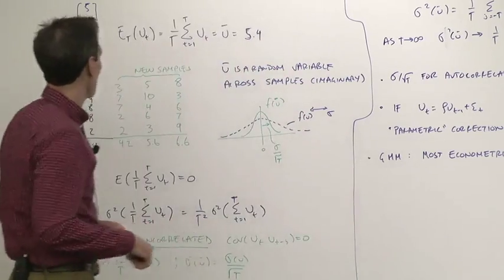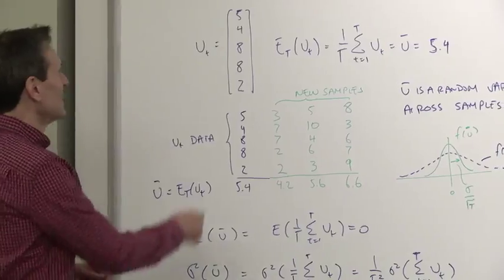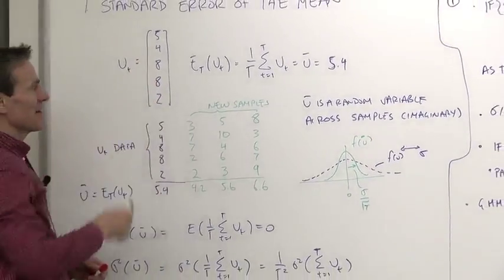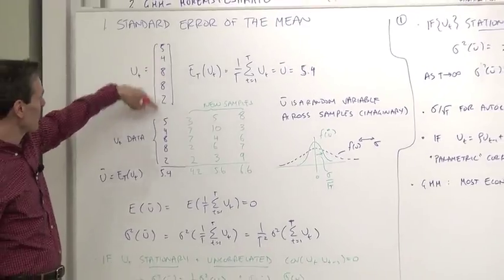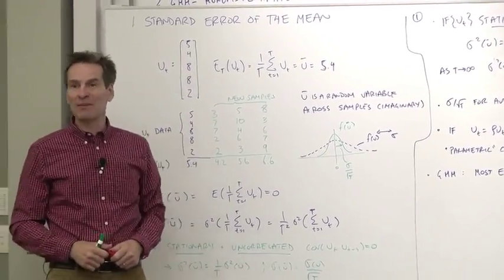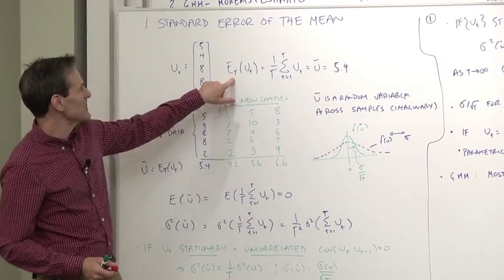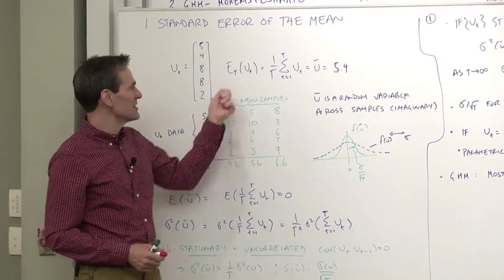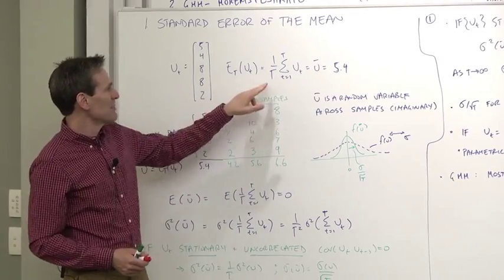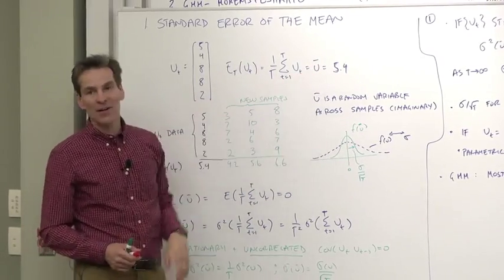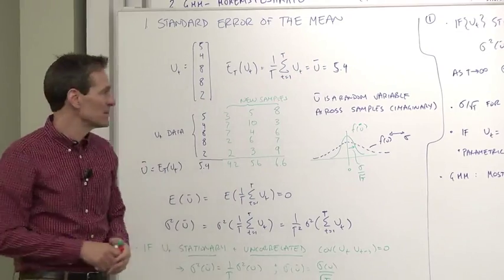So standard error of the mean as a reminder. Let's let ut be a random variable and I just took a random number generator, you know 54882, that could be a sample of data like a sample of returns that we've seen before. I'll use ET, E sub capital T. That notation means the sample mean. The sample mean of ut is in this case 5.4. We also use the notation u bar for that sometimes.